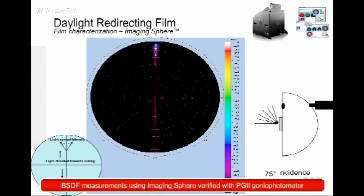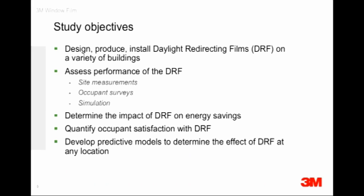We got fairly good agreement between these results, especially though there is a challenge at very high angles — people who work in this area know that's a big challenge. Now that we have a somewhat optimized design, what is the best overall performance you can get? You can optimize for any one particular angle, but the sun is not stationary and buildings are not all the same — different orientations, different latitudes. So the film has been designed for an overall average best performance.